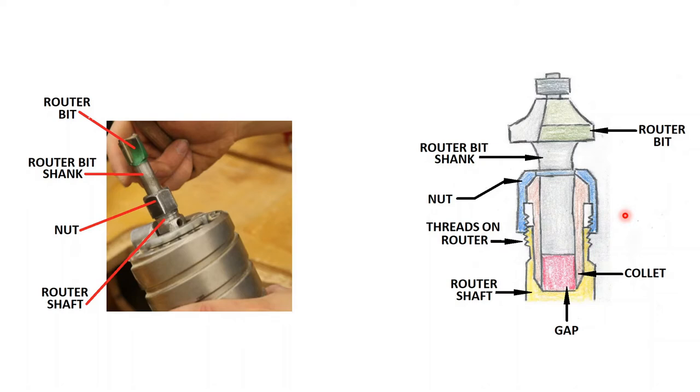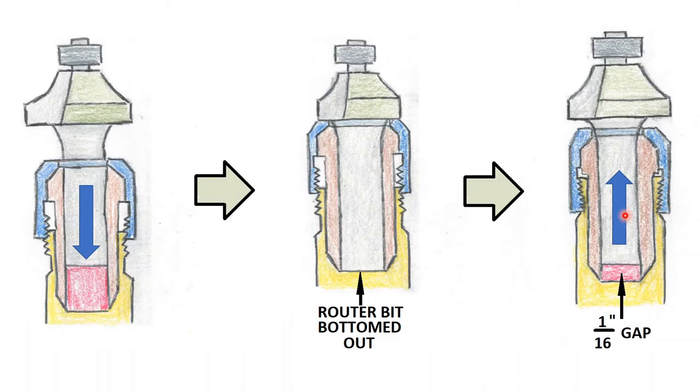So now that we know more about the parts of the router, let's talk more about how you ensure the router bit is best put into the router. So if you look to the left over here, the very first step is to take your wrench and to loosen that nut. So you can sort of see some of these threads that are being exposed. And it should be loose enough that you can take the router bit and slide it into the router shaft into the shaft without any problems.